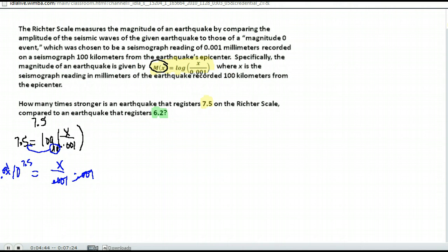So all I have to do is take out my calculator, find 10 to the 7.5 power and multiply it by .001. I can't just leave it at .001 times 10 to the 7.5. Remember exponential first. So 10 to the 7.5 first and then times .001.